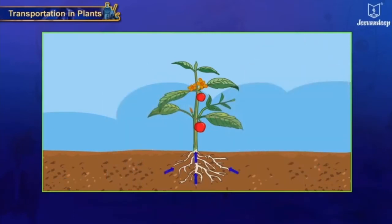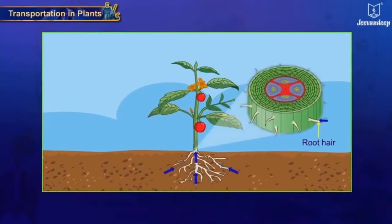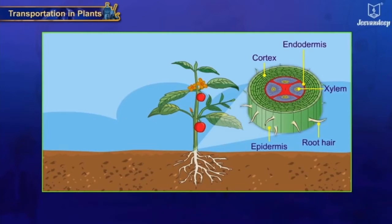Water from the soil enters the root hairs, epidermis, cortex, endodermis, and then into the xylem bundles through the process of osmosis.